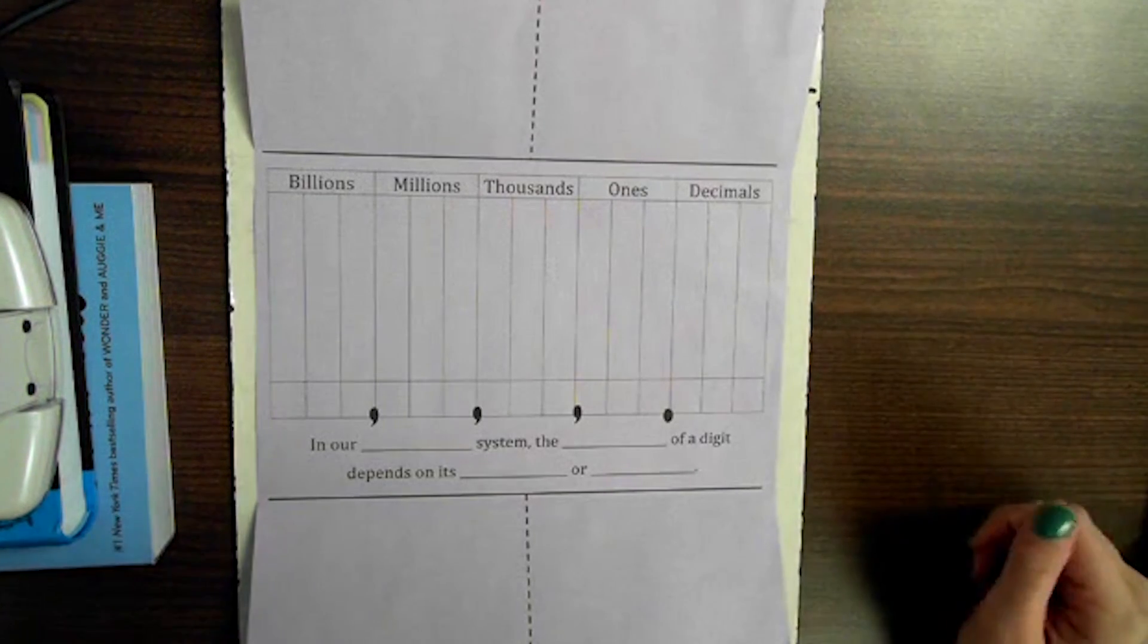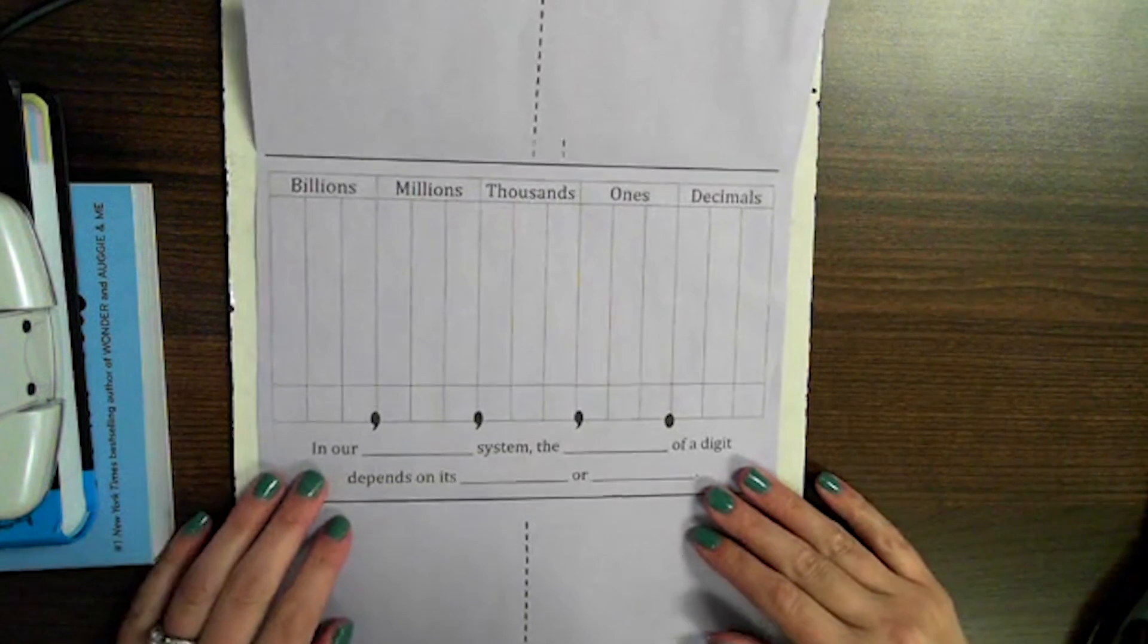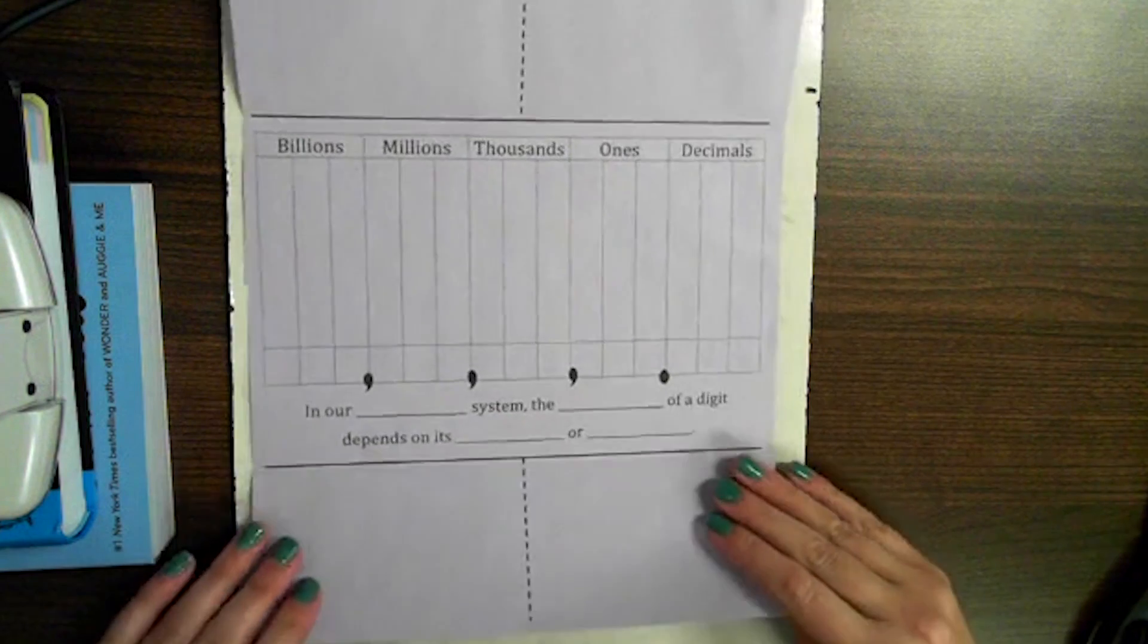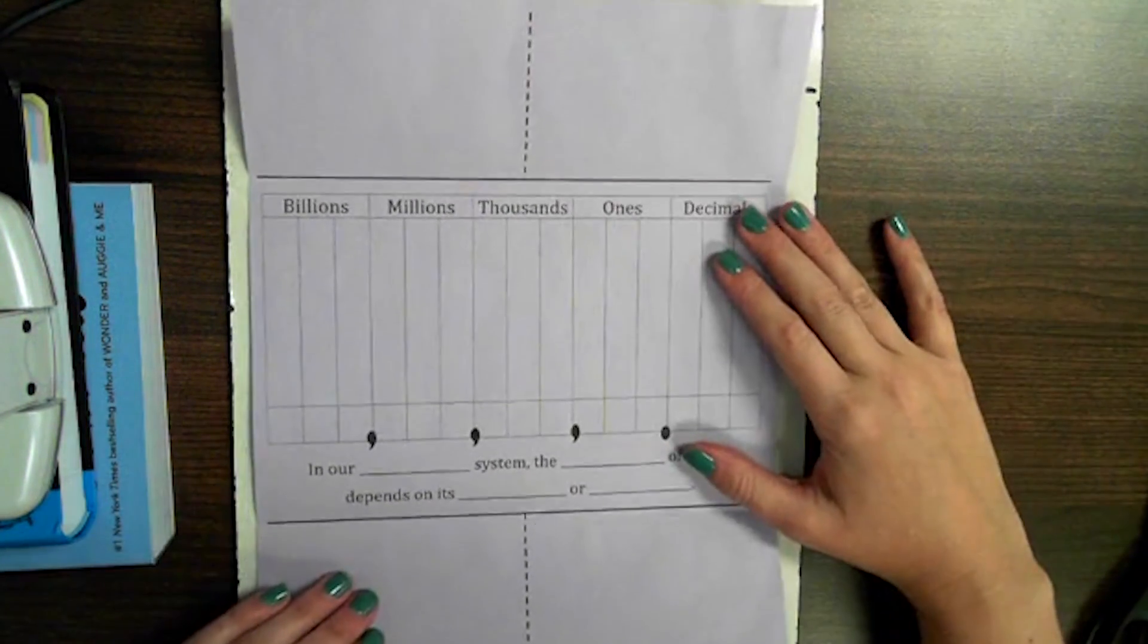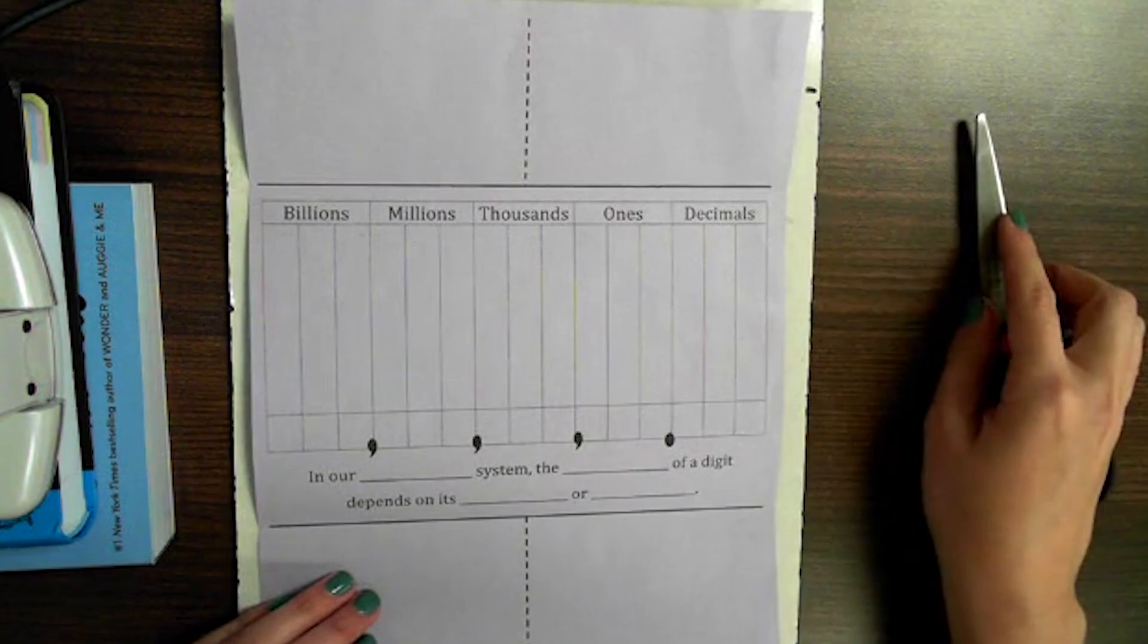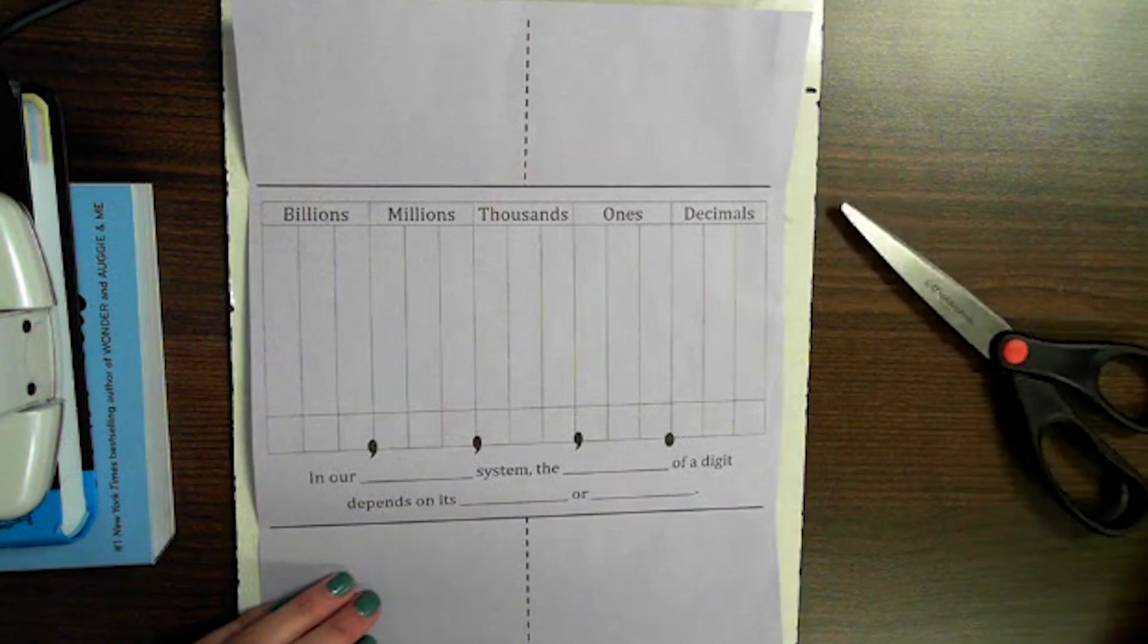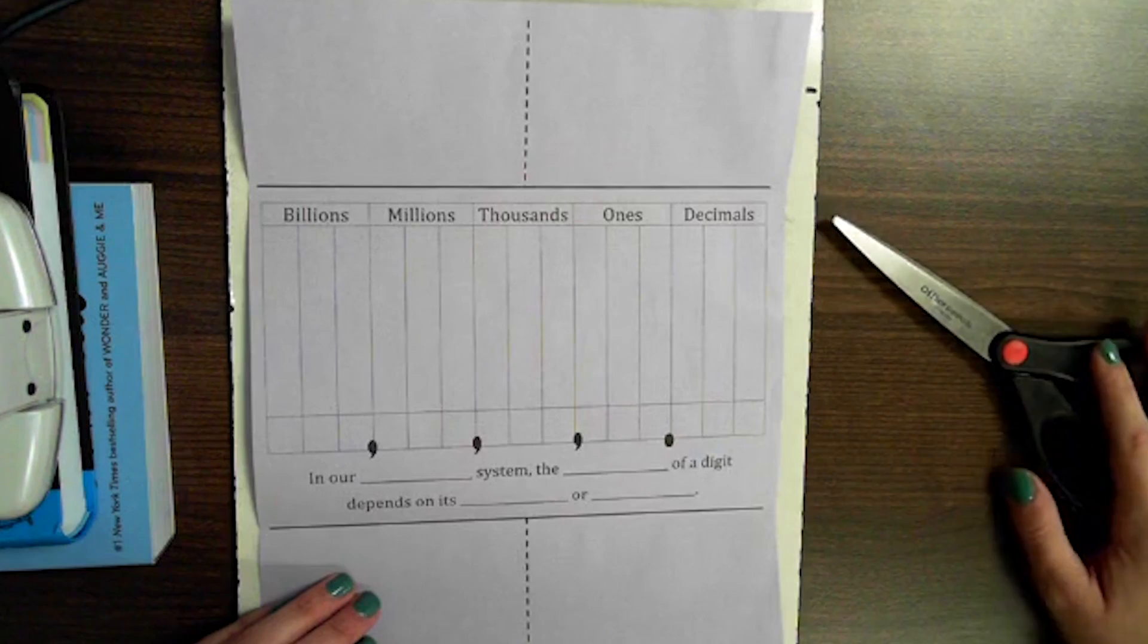Hey guys, Mrs. Cates here. We're going to be filling out this foldable today. If you will please follow what I'm doing on your screen. First of all, you're going to need a pair of scissors and something to write with. Make sure you have those items out.